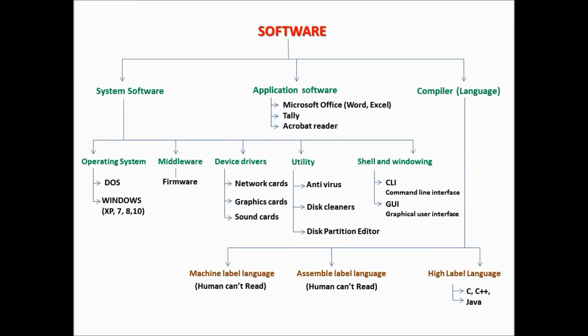Now we discuss the software chart. Software are three types: system software, application software, and compiler or language. System software are six types: operating system, middleware, device drivers, utility, and shell and windowing software — which includes CLI (command line interface) and GUI (graphical user interface). The operating system is two types: DOS and Windows. Middleware software is firmware. Device drivers include network cards, graphics cards, and sound cards. Utility software includes antivirus, disk cleaners, and disk partition editor. Application software includes Microsoft Office, Tally, and Acrobat Reader.